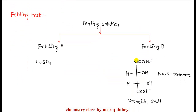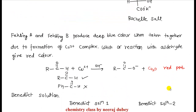Next, let's look at Fehling's reagent. Fehling's solution is a mixture of two solutions: Fehling A and Fehling B. Fehling A is copper sulfate, kept in a separate bottle. Fehling B is sodium potassium salt, also called Rochelle salt — sodium potassium tartrate. When Fehling A and Fehling B are mixed, a complex is formed and that complex generates a characteristic blue color.